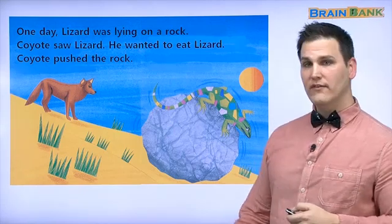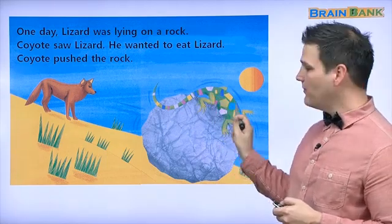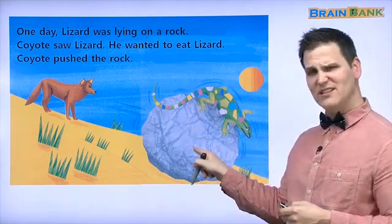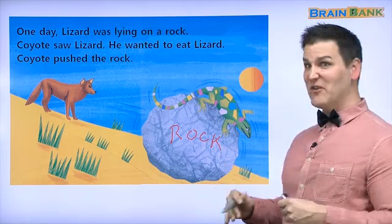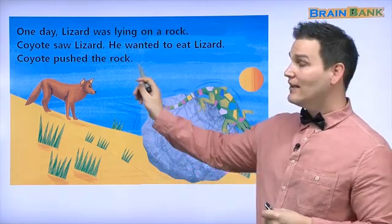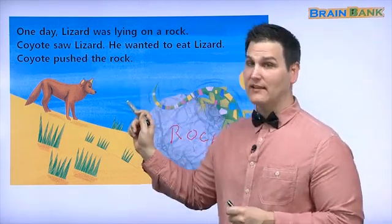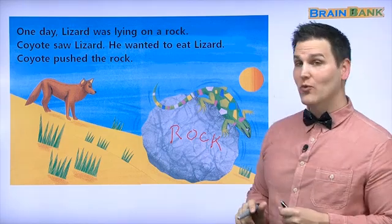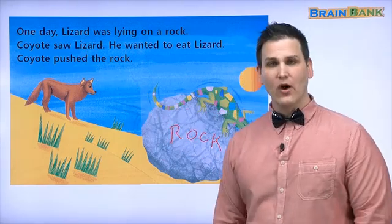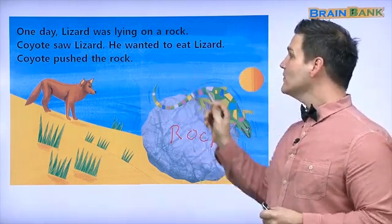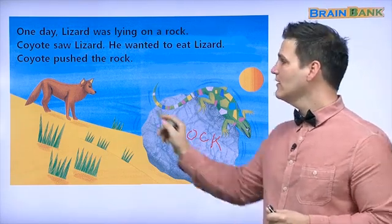Oh, we have a new animal! Here's our lizard — our domabem. He is on a rock, a very big rock. Let's read: 'One day, lizard was lying on a rock. Coyote saw a lizard. He wanted to eat. Coyote pushed the rock.'